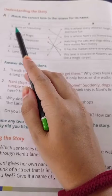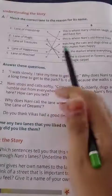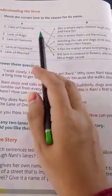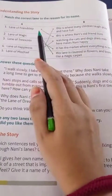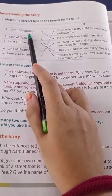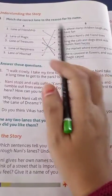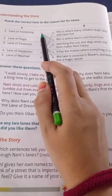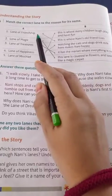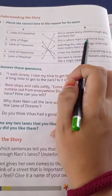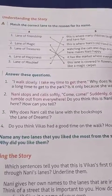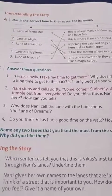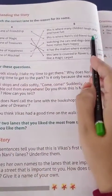The first one is Lane of Friendship. This is where Nani's old friend lives. Lane of friendship — जहां नानी के old friends रहते थे. So match number one with this: 'Lane of Friendship — This is where Nani's old friend lives.' And write number one here.